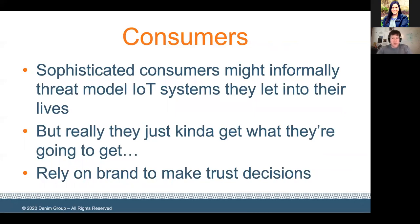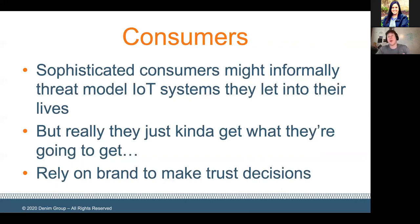From a consumer standpoint, some sophisticated consumers might informally threat model IoT systems, but really as a consumer, you're just going to kind of get what you get. I've had discussions with my wife — hey, should we get one of these personal assistants? I'm like, do you really want something sitting in our house listening to everything that we say? I suppose I'm a reasonably sophisticated consumer because of my background. But a lot of consumers just rely on the brand to make trust decisions — is this something coming from a large technology firm that I know and trust? Okay, good. Is this from some firm I don't know anything about, from overseas? Maybe I'm not going to use that as my fitness tracker.